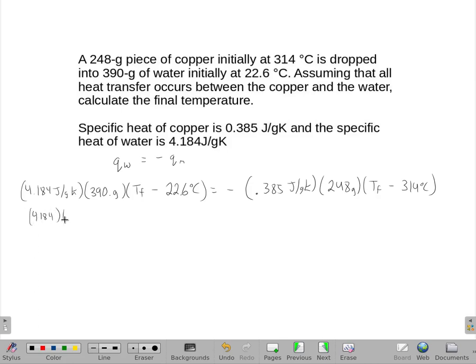So I'm going to have the 4.184, and I'm going to drop the units to write this out, and the 390 times the Tf, and then minus 4.184 times 390 times 22.6. So I've distributed that negative into two separate things.